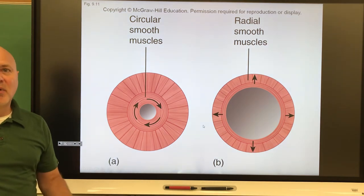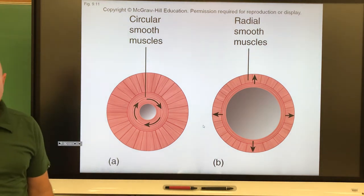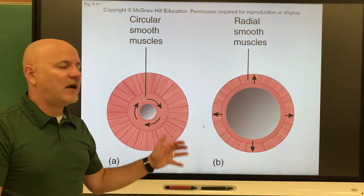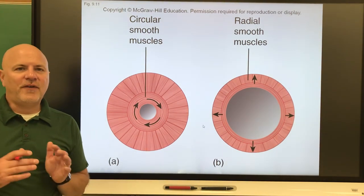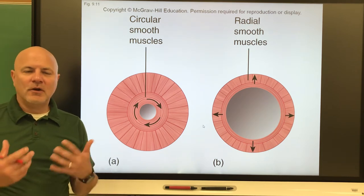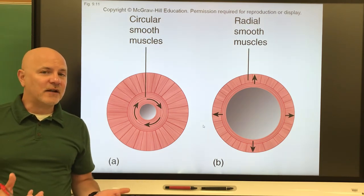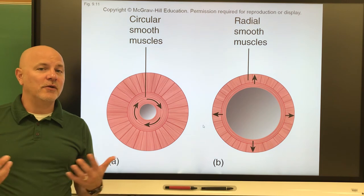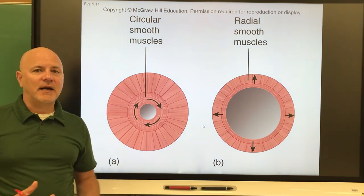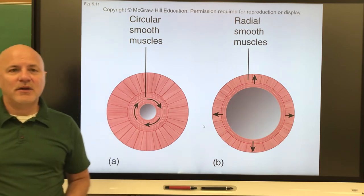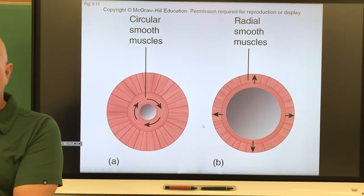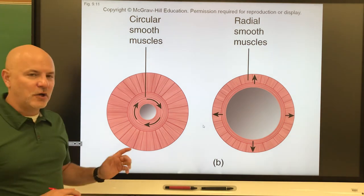We can also have constriction and dilation occur in other instances. If you find something appealing or you're problem solving, your eyes are going to dilate. This in fact occurs when you're looking at somebody who you find attractive. Your eyes will dilate during that time period. If you're bored or repulsed, your eyes will constrict. Other things that you're not totally in control of.